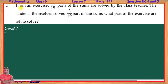Now, Question 5. From an exercise, 5 by 19 parts of the sums were solved by the class teacher. The students themselves solved 3 by 19 parts of the sums. What parts of the exercises are left to solve?